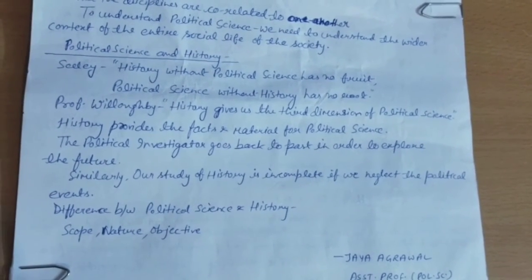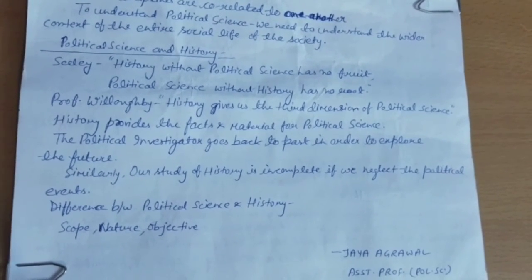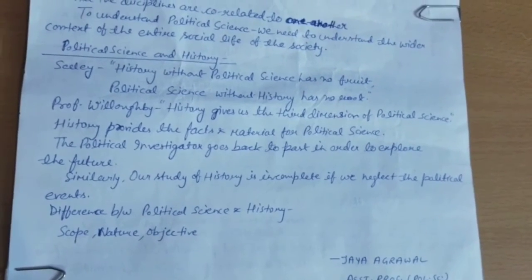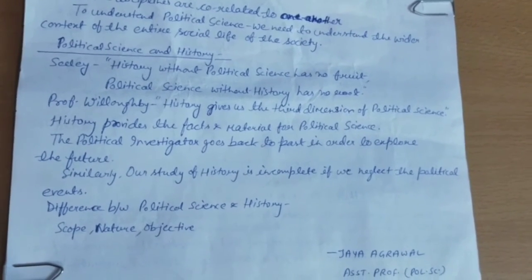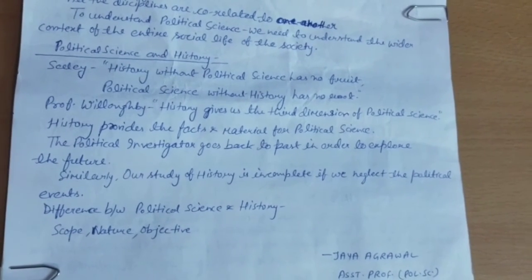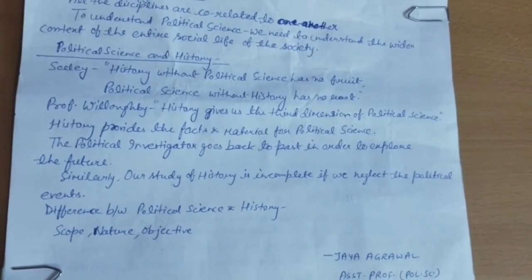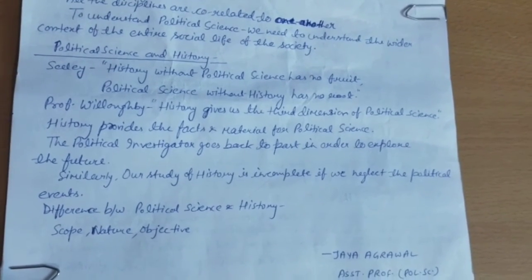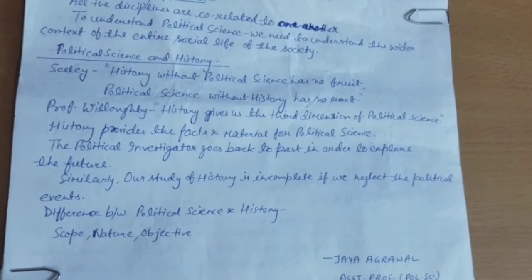The political investigator goes back to the past in order to explore the future. It is true that Sealy and Freeman have described the relationship between history and political science in a wider context. Yet it cannot be denied that in order to fully comprehend the origin and development of political institutions, we have to seek the help of history, because the roots of political institutions have gone deep into the soil of history. For example, if we want to understand the nature of monarchy in Britain and the working of the British Parliament, we shall have to study the history of Britain thoroughly.